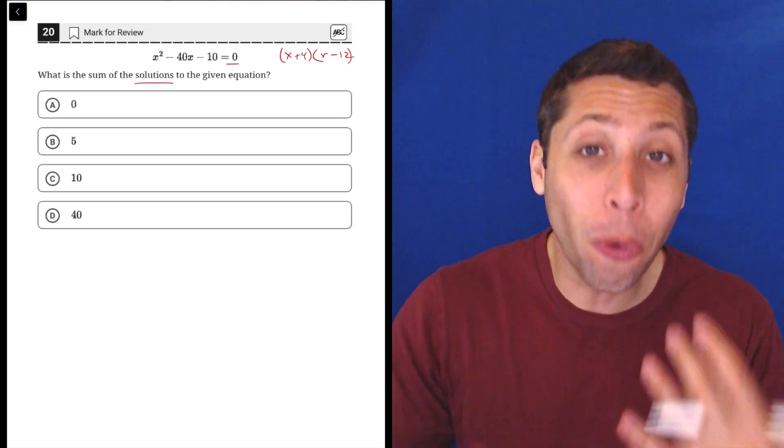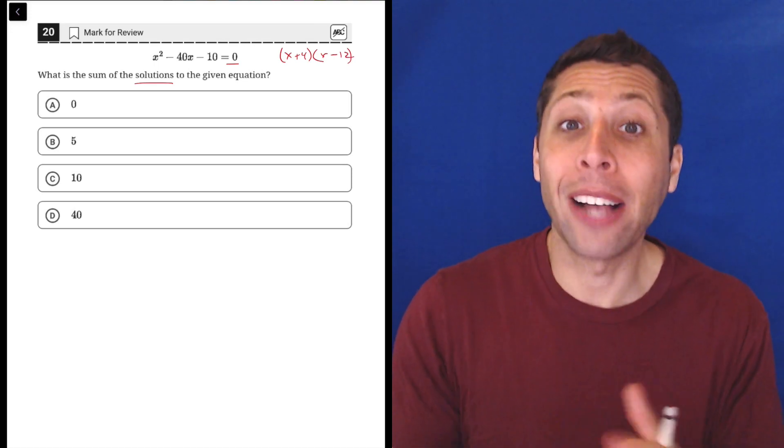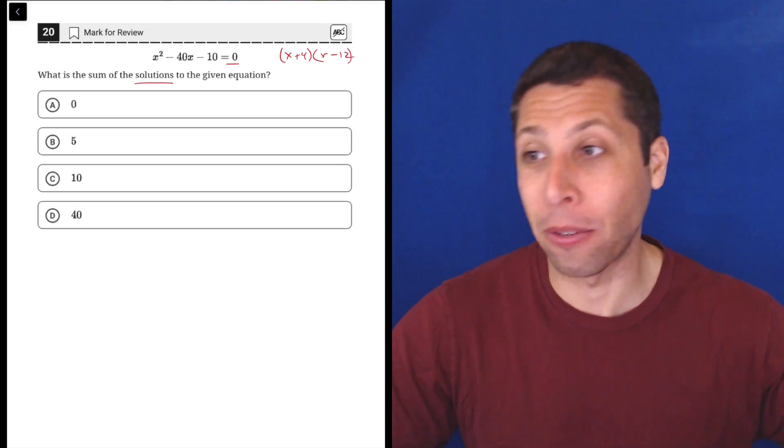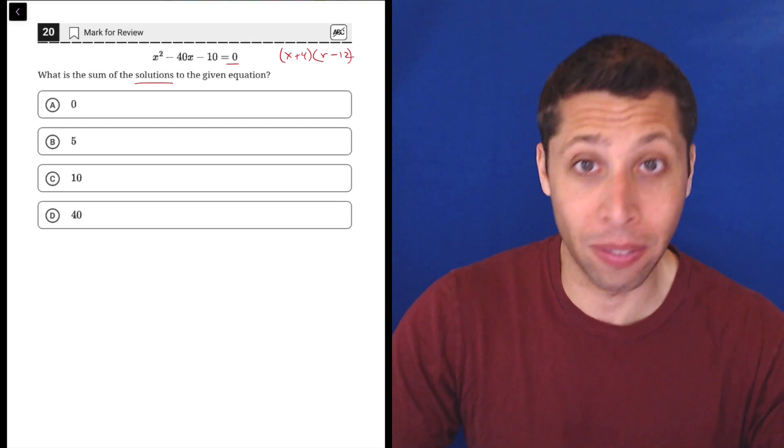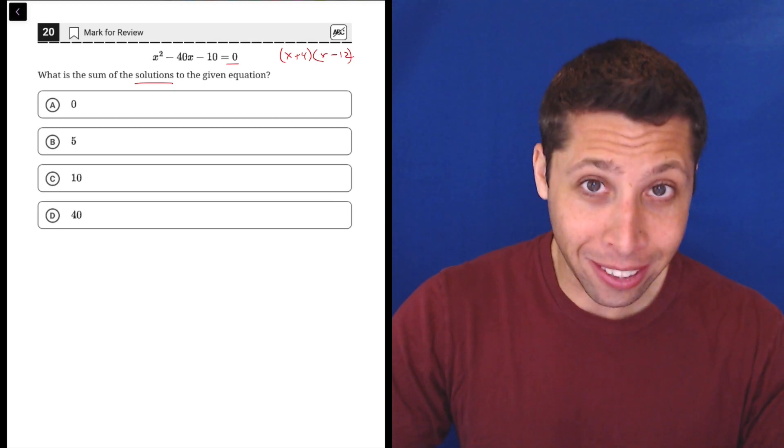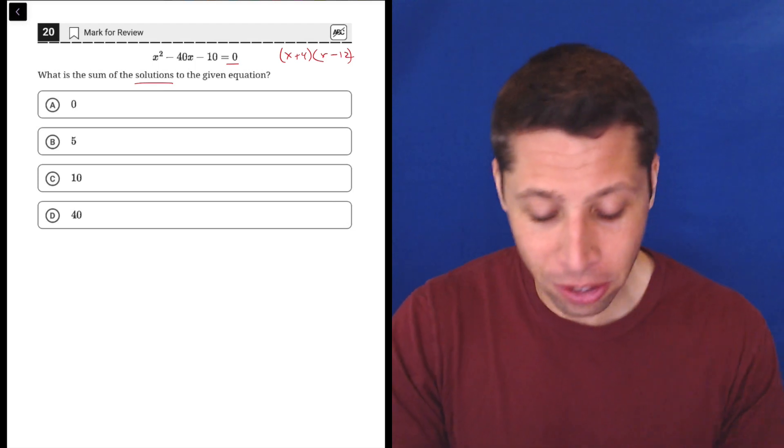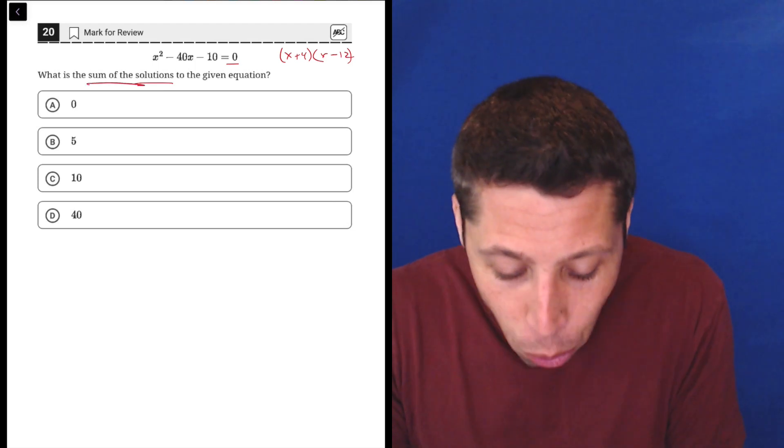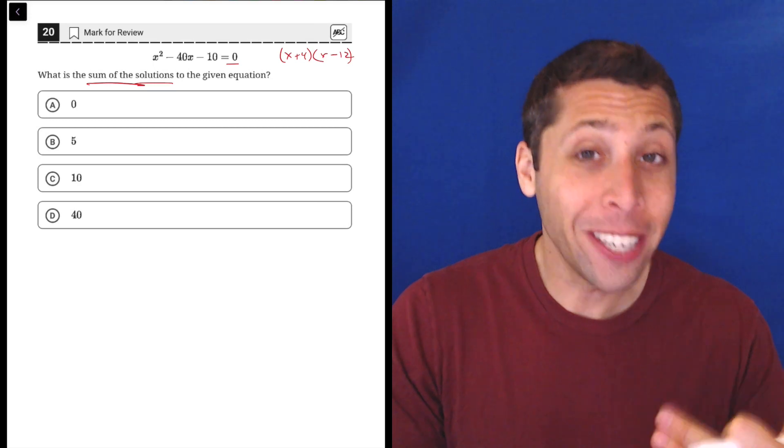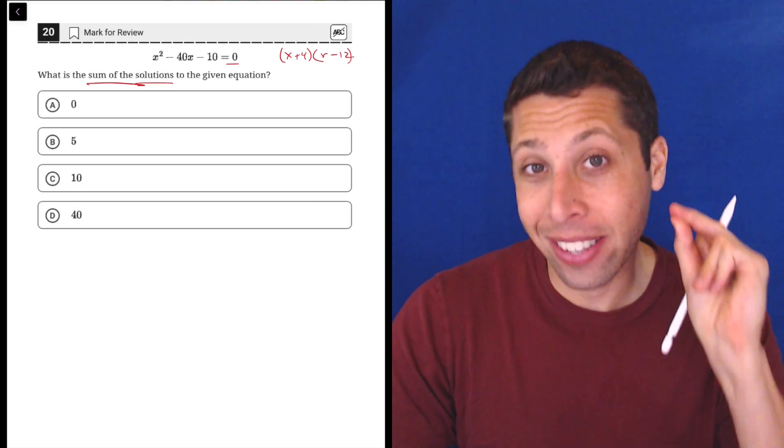We would have to use quadratic formula to get those values of x, and that is way too advanced, in my opinion, for a PSAT, so we just don't want to even touch that. Basically, though, there's a shortcut, because they're not asking for the solutions. They're asking for the sum of the solutions, and there is a formula that just gives us that.